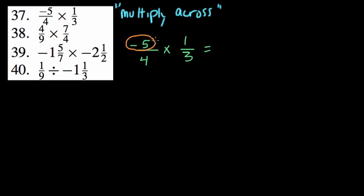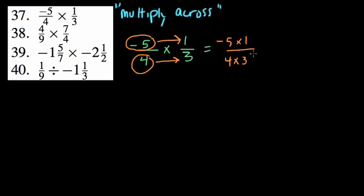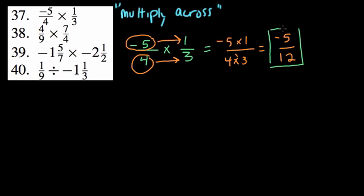What you do is literally multiply across: take one numerator and multiply it by the other, which is negative 5 times 1, and this is going to be over 4 times 3. You can evaluate this — negative 5 times 1 is negative 5, over 4 times 3 which is 12. Usually what might throw us off is where to put the negative sign — does it go with the numerator or denominator?